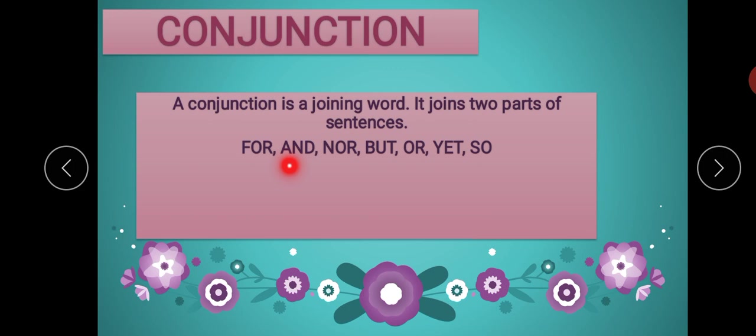The conjunctions include: for, and, nor, but, or, yet, so — these type of words are examples of conjunctions.